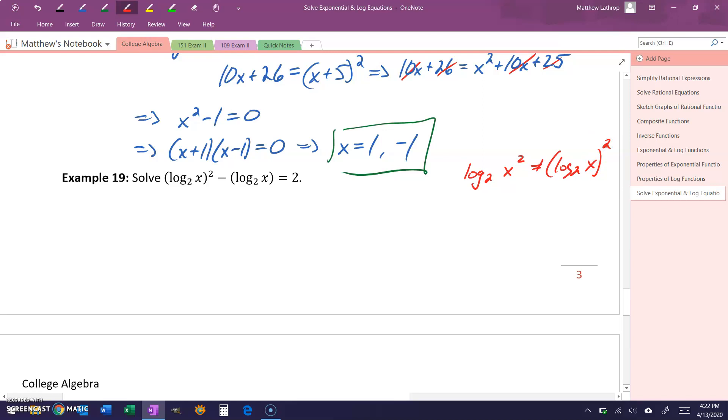So with the expression that we have in example 19, that entire logarithmic statement is being squared, versus in the case where we have log base 2 of x squared, the only thing that's being squared is the x. If this square is on the outside, there's nothing we can do in terms of properties of logs to bring that down as a factor in front, so we need to take a different approach.